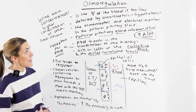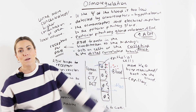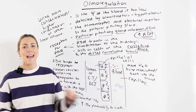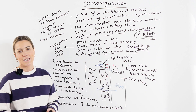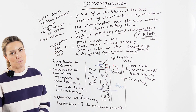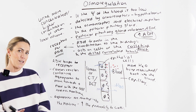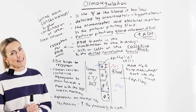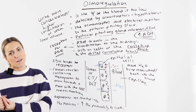Obviously, if the water potential of the blood was too high, we'd say the opposite. The posterior pituitary gland does not secrete ADH, so you don't have ADH increasing the permeability of these cells. You don't get excess water being reabsorbed into the blood, so the urine would be a larger volume and it would be more dilute. Hope you found that video useful — do let me know in the comments how you found it and if there are any other topics you'd like me to explain.